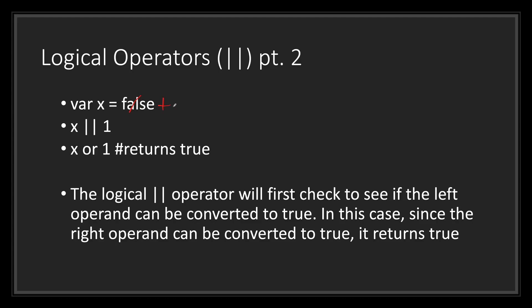Let's see what the order of operations would look like if our variable x were true instead of false. Because x is now true, the logical OR operator will first check to see if x can be converted to true. Because x can be converted to true, the logical OR operator stops all operations and returns true, since it only needs one value to be converted to true. The AND operator, by contrast, is trying to find a single operand that can be converted to false — if it finds one, it stops all operations and returns false.